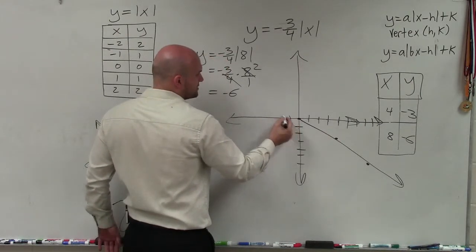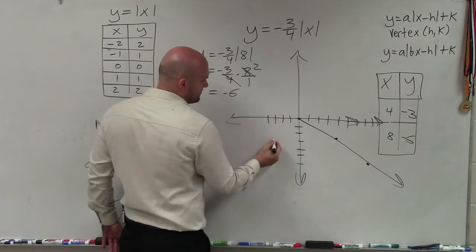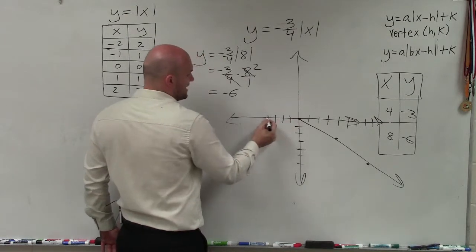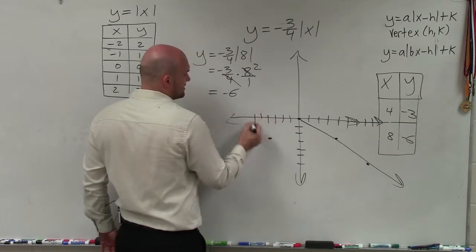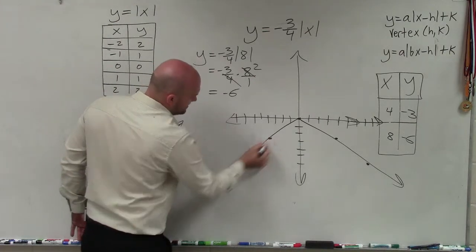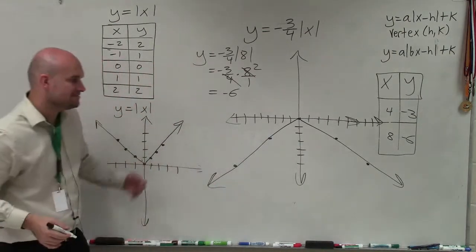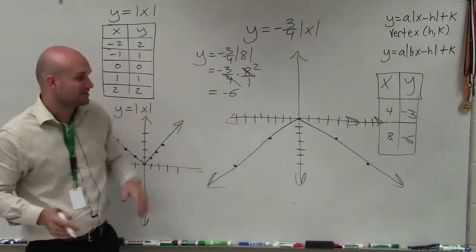I can go left 4, down 3, and left 8, down 6. And you can see then I'm now symmetrical about that, so I can just reflect it over.